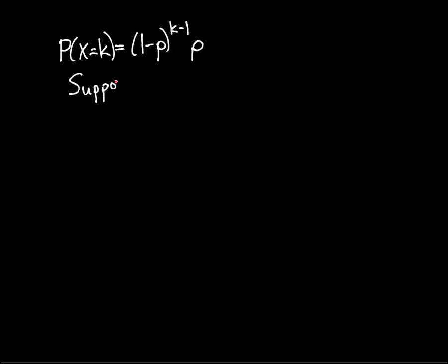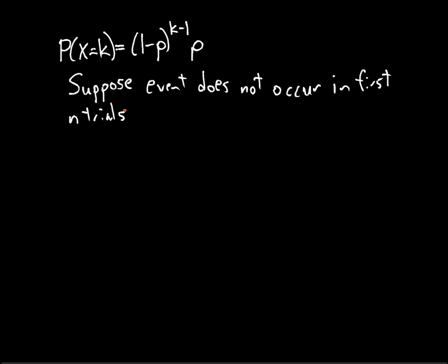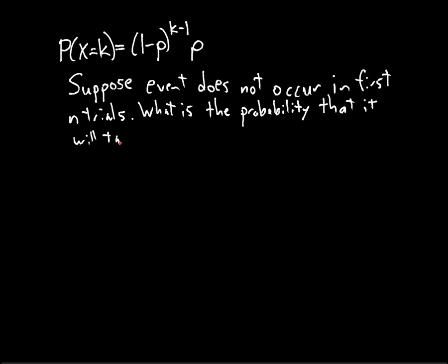Let's suppose that the event does not occur in the first n trials. What is the probability — where m is some positive integer — that it will take m more trials for the event to occur?